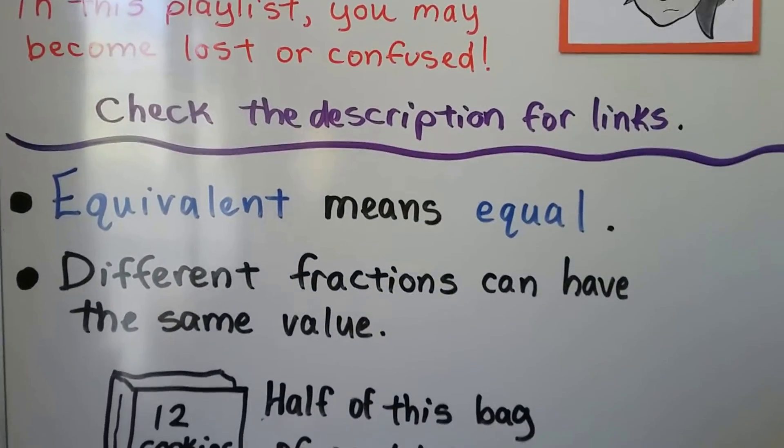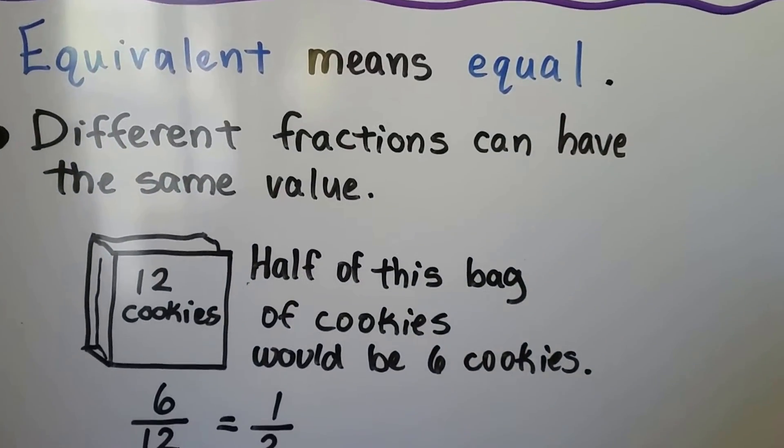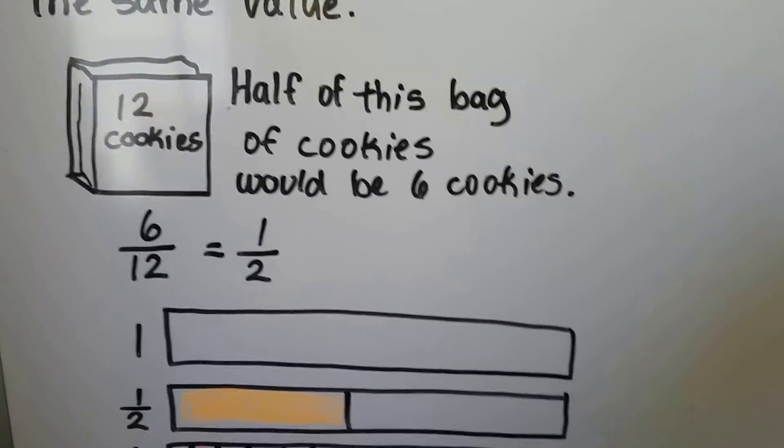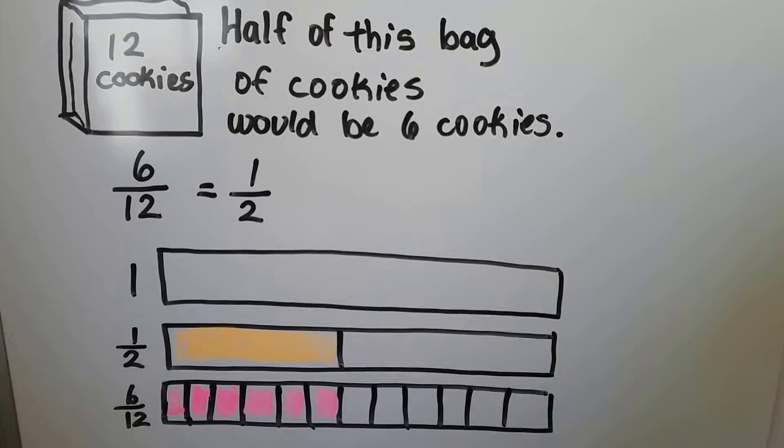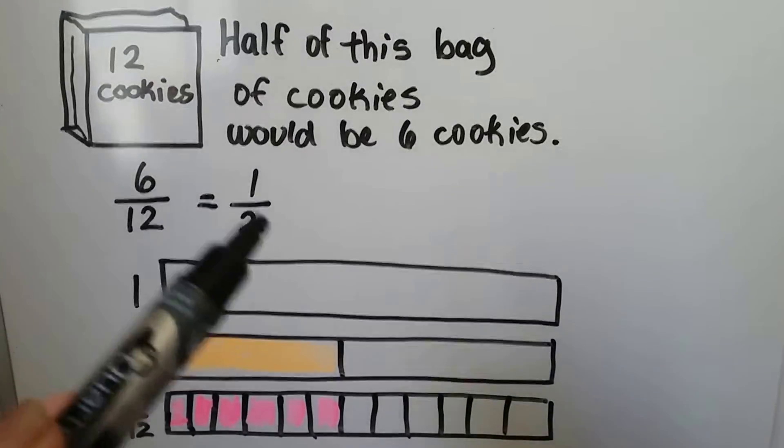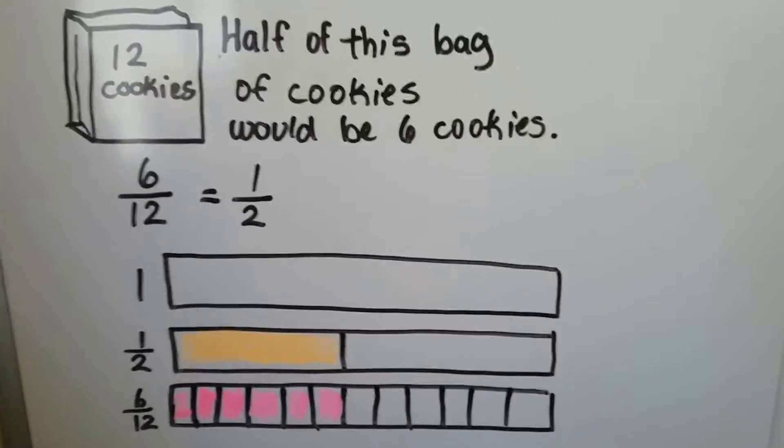Equivalent means equal. Different fractions can have the same value. We have a bag of twelve cookies here. Half of this bag of cookies would be six cookies, right? That would be six out of twelve, and that would be a half. So six twelfths is the same thing as a half.